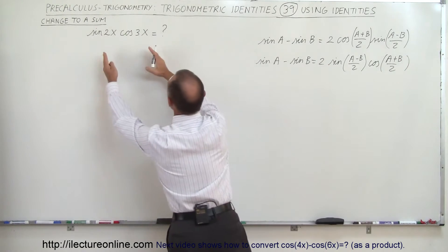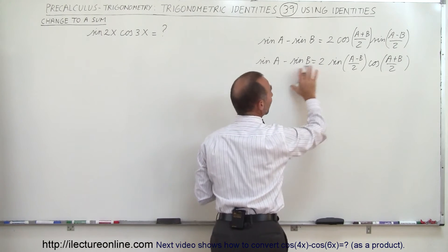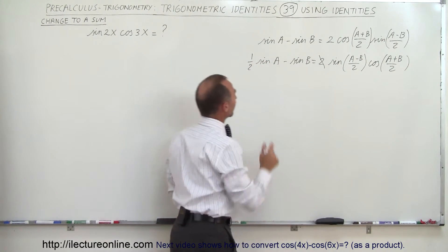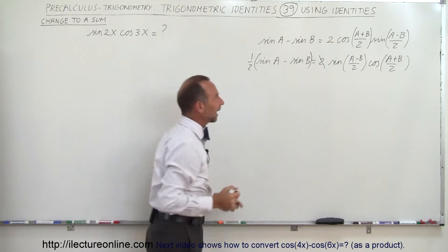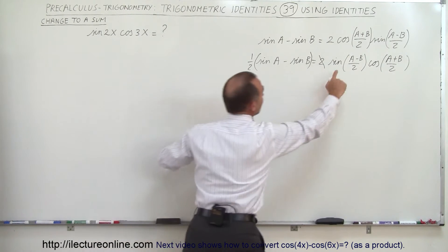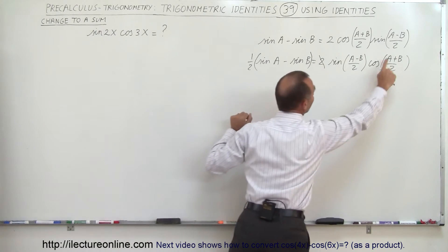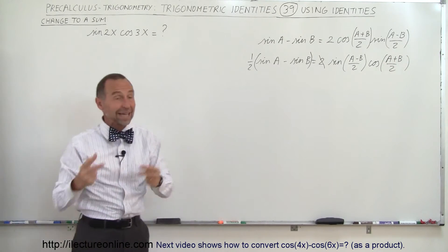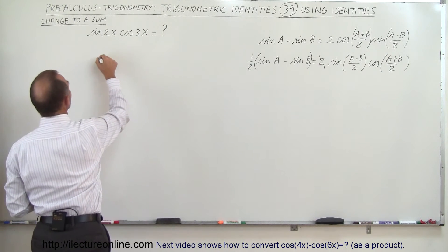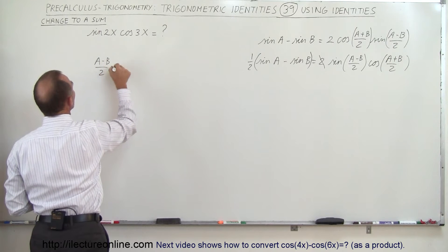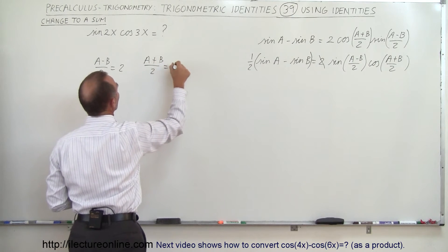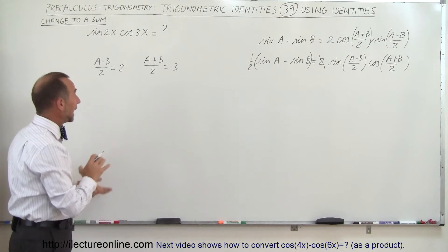So now I have this in the exact same format. I don't have the 2 there, so I'm going to divide both sides by 2 — dividing by 2 here and by 2 there gives this instead. I need to put parentheses around it like that. So now I can change this into this. I can say that (a minus b)/2 should equal 2, and (a plus b)/2 should equal 3. Then I can solve for a and b and write it in that form.